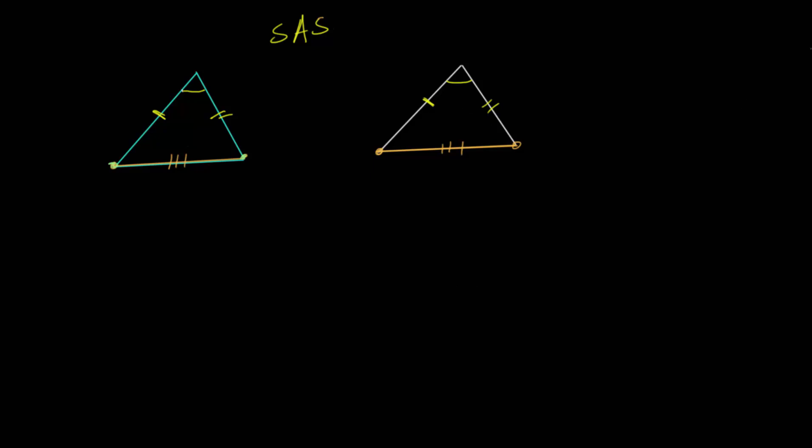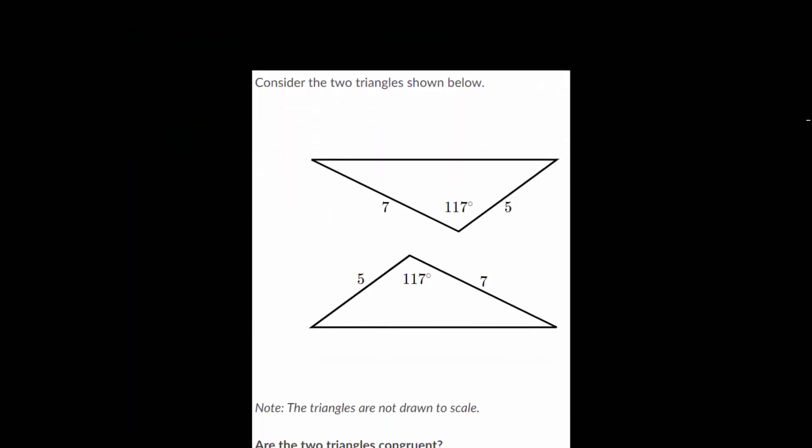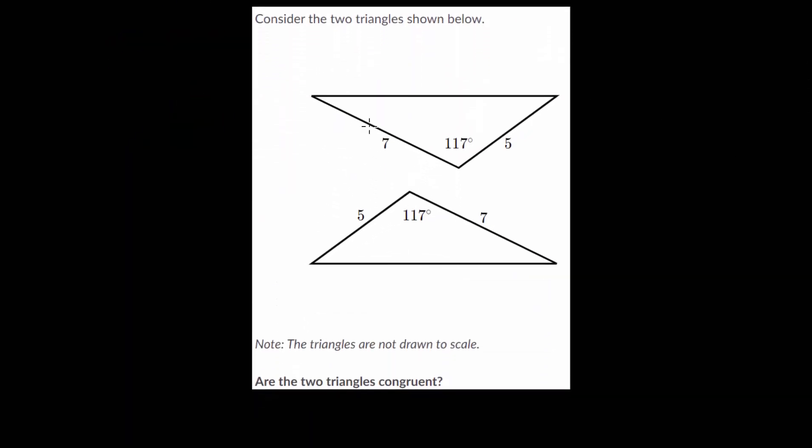So if we look at an example problem, if we have two triangles and we know that they share two sets of equal sides, so these are length five in green and in yellow, they're length seven, and the angle between them is the same angle, then that's enough information to determine that the triangles are congruent.